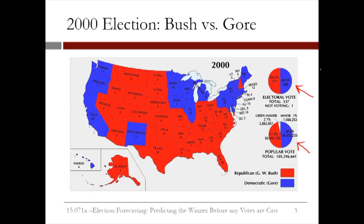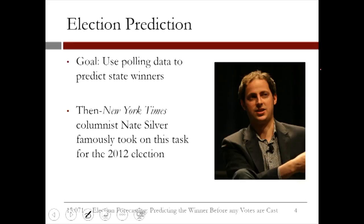So our goal will be to use polling data collected from likely voters before the election to predict the winner in each state, and therefore to predict the winner of the entire election in the electoral college system. While election prediction has long attracted some attention, there has been a particular interest in the problem for the 2012 presidential election, when then New York Times columnist Nate Silver took on the task of predicting the winner in each state.